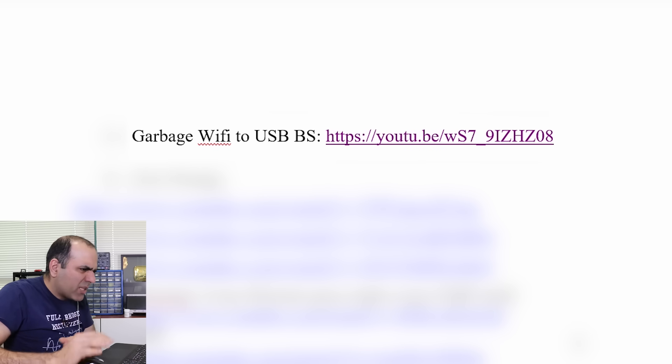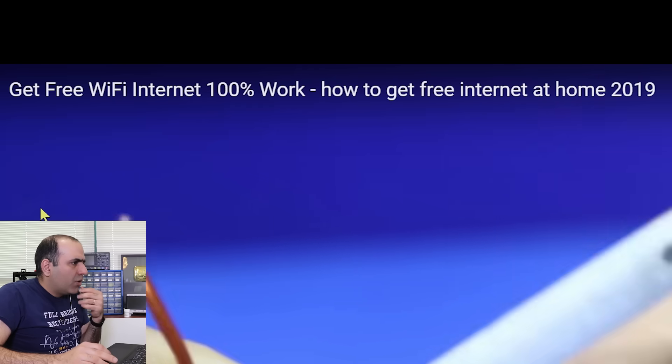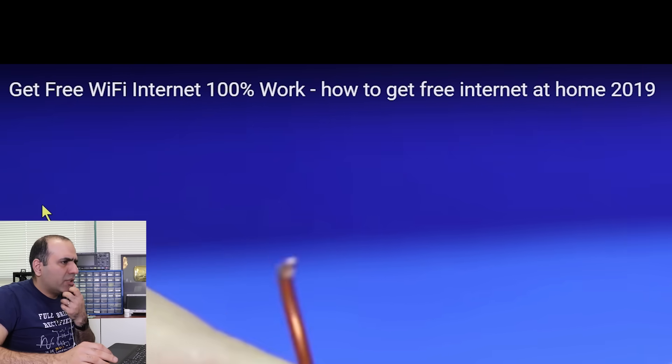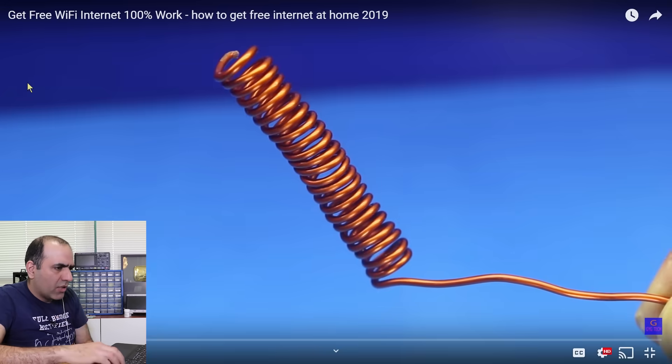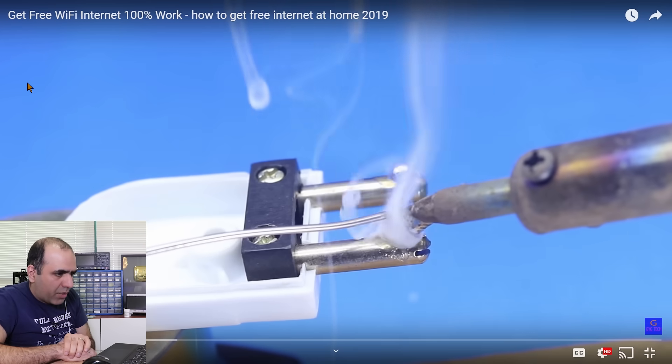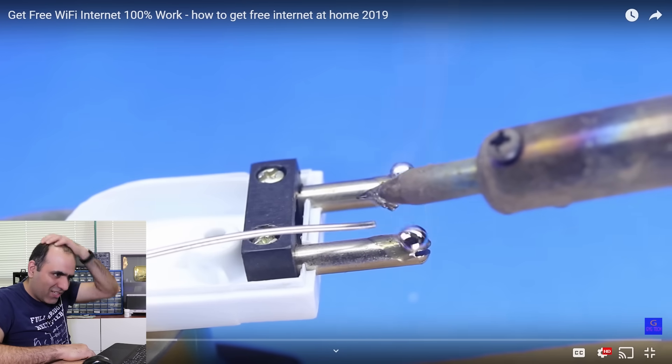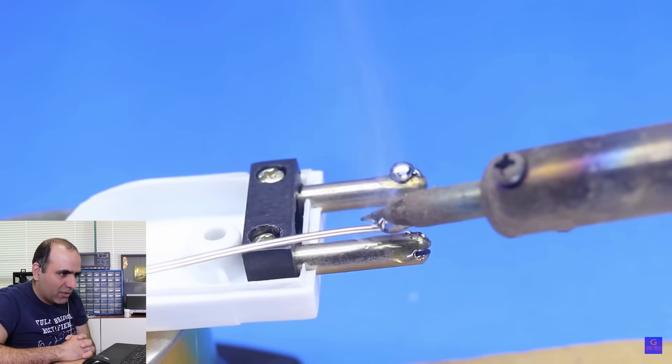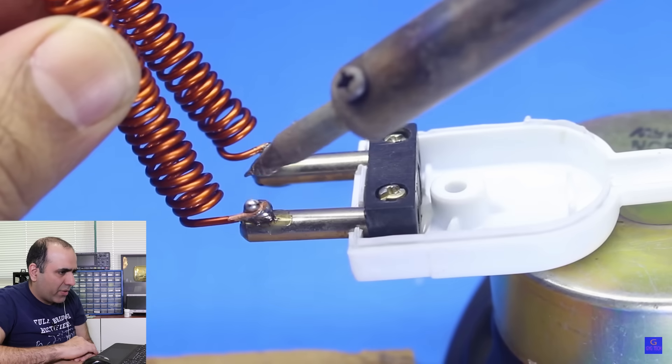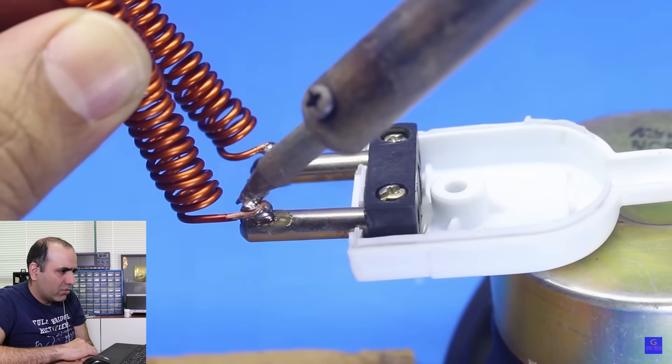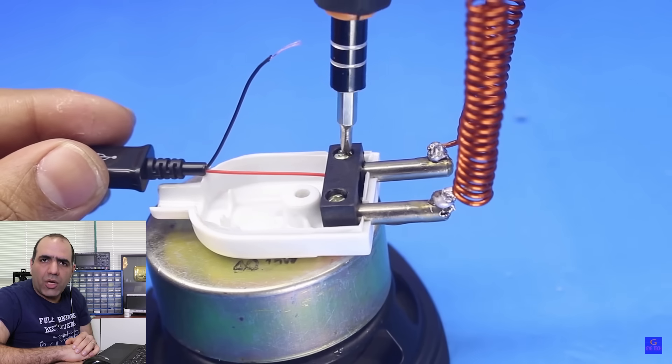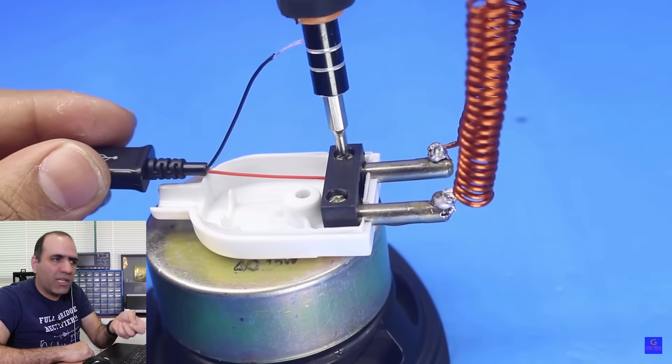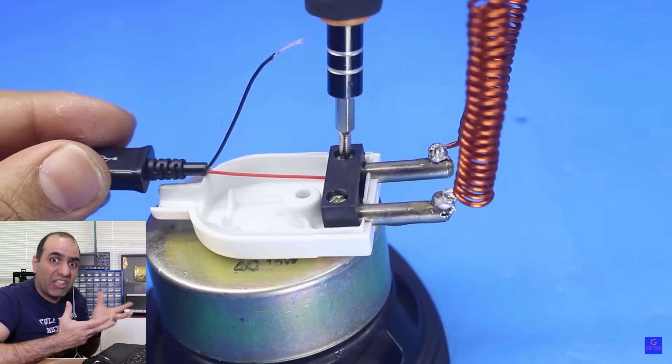What's next? Garbage WiFi to USB BS. What is this? Get free WiFi internet 100% work. Well, he's making a coil like so, tries to solder them to a power prong. And it doesn't solder to it because, well, it doesn't, and he does it anyway, how, with a crazy glue. He has a USB charger with power wires only. What is he trying to do? Is he trying to charge his cell phone using this antenna wirelessly, I suppose.